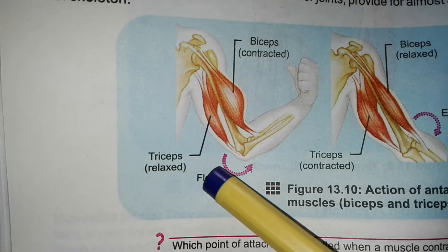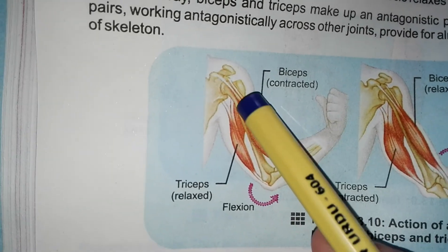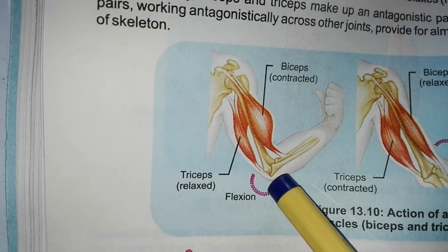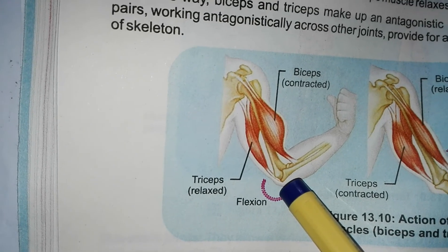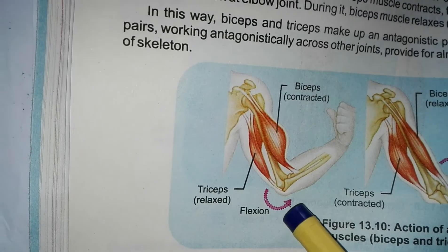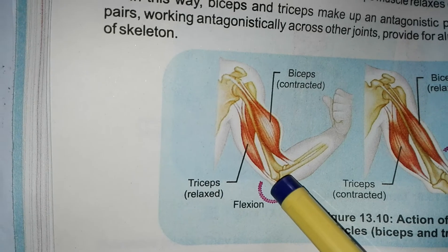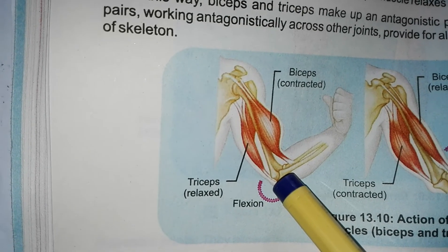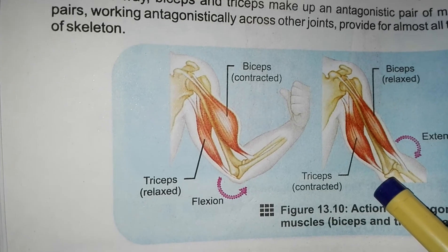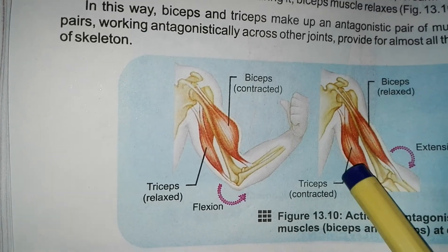When one muscle contracts and bends the joint, that muscle is called a flexor and the movement is called flexion. If a muscle contracts and the joint bends, the movement is called flexion.